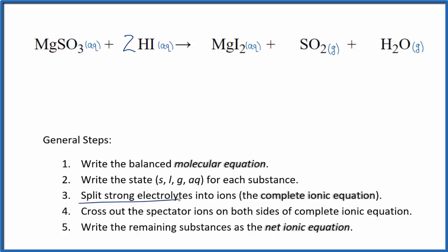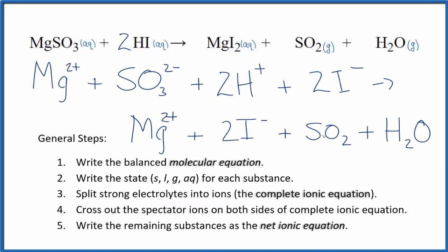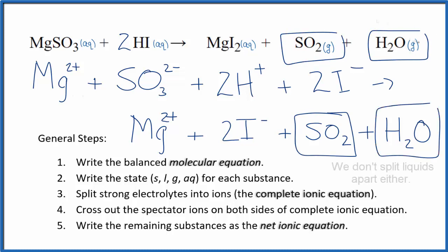Now we can split the strong electrolytes into their ions and that'll give us the complete ionic equation. Note that we don't split gases apart and water. I have that as a gas, but it should probably be a liquid. So let's change that to a liquid. That's the complete ionic equation.